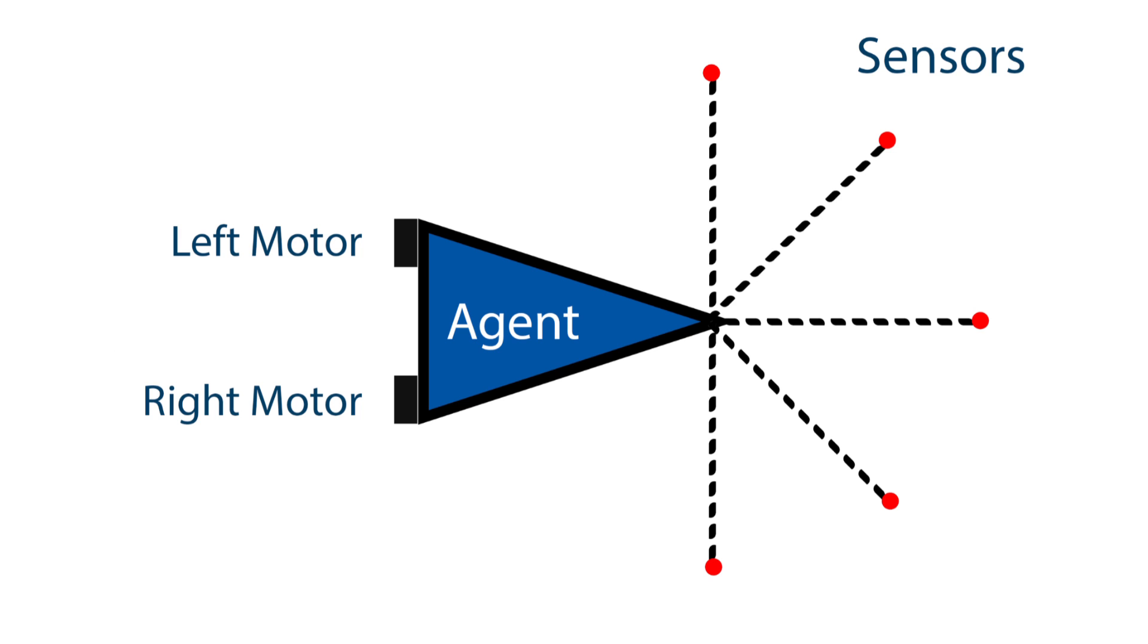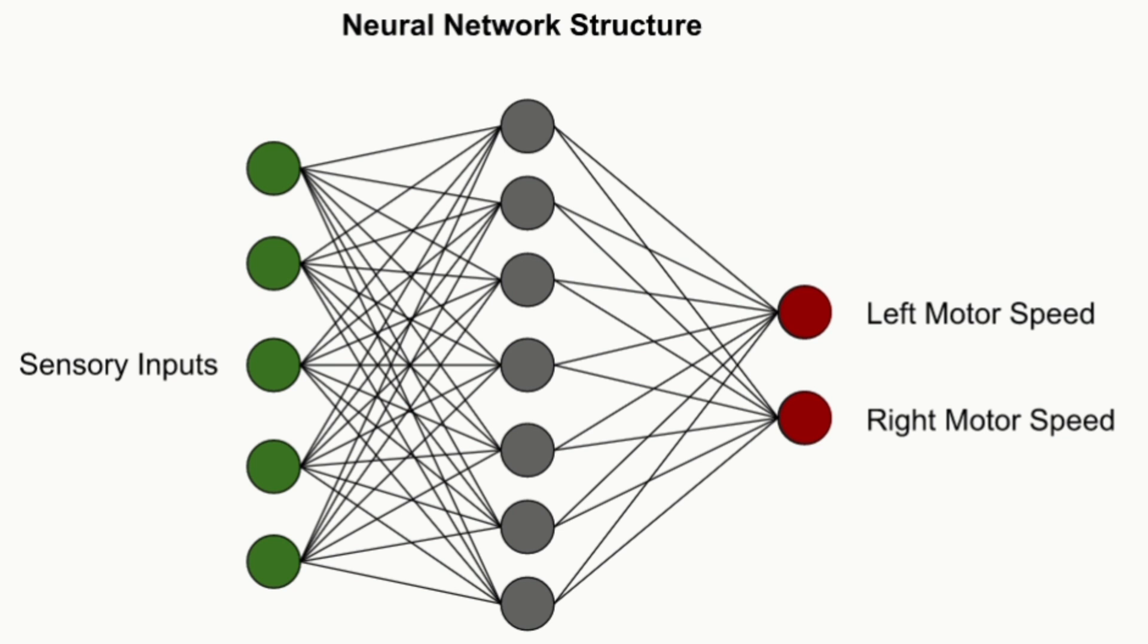An agent is defined as an entity that takes sensory input and produces outcomes that affect its environment. In this case, the agent has five collision sensors and two motors to move left and right. The brain of the agent is represented by a neural network.